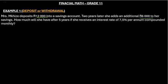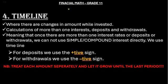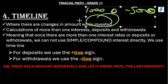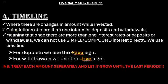Let's quickly review our notes. We use a timeline when there are changes in amount while invested. So maybe if I invested R1,000 today then tomorrow I decide to withdraw R500, then now there are changes in the money that I have invested. This means I should need to use a timeline in order to calculate the money that I will get at the end of my period. When we are dealing with calculations of more than one interest or deposits or withdrawals, we use a timeline.